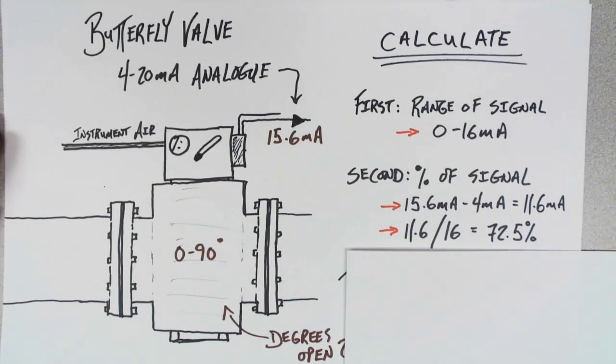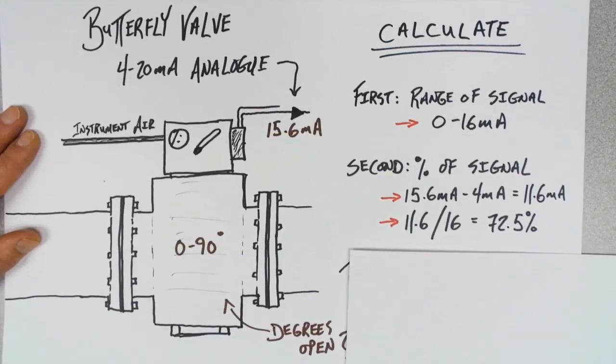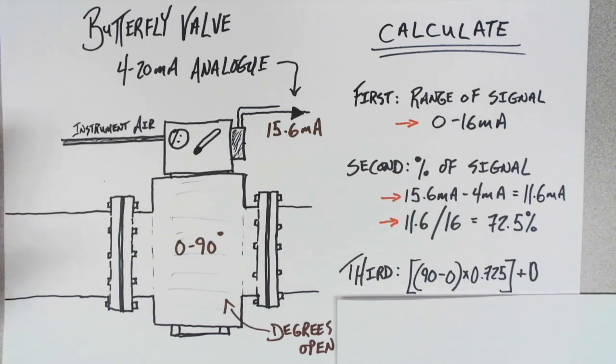Now, what we have to do is a pretty simple application, although I suppose we could use this calculation. Really, 90 minus 0 times 0.725 plus 0 is the same as just taking 72.5% of 90. And what this leaves us with is the valve opening to a precise angle of 65.97 degrees.